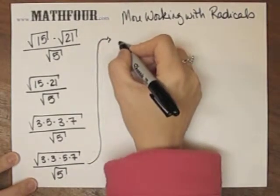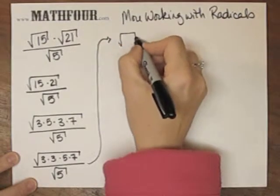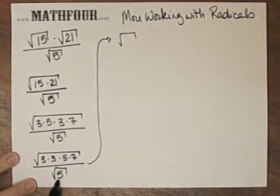I'm going to pull it apart. Notice I have a 5 here and a 5 here. So if I can get that 5 isolated under its own little house, I can cancel with this little 5 under its house.